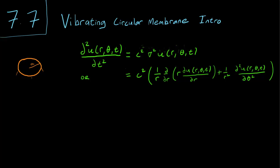Remember that the Laplacian looks a little different when expressed in polar coordinates. In polar coordinates the Laplacian is written as 1 over r times the derivative of r(∂u/∂r) with respect to r, plus 1 over r² times the second derivative of u with respect to θ.